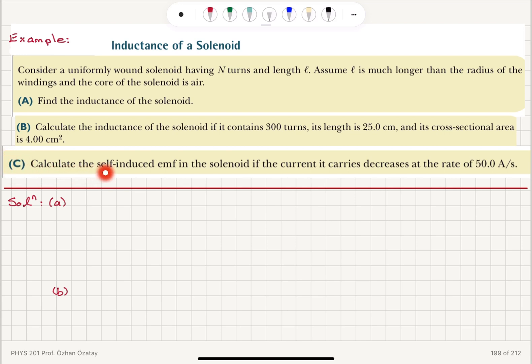Part C: Calculate the self-induced EMF in the solenoid if the current it carries decreases at the rate of 50 A per second.